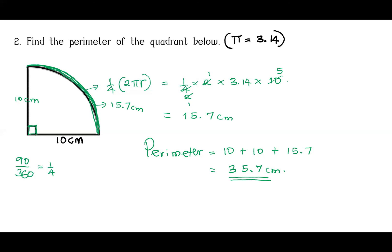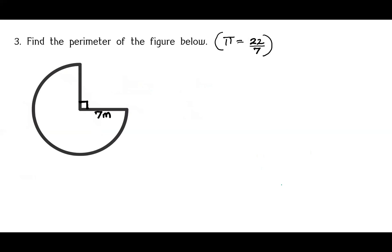Now let's get the final example: find the perimeter of the figure below. You can see this figure is three quarters of a whole circle — this is a quarter, a quarter, and a quarter, making three quarters. The length of this arc will be three-quarters times the circumference of a whole circle.